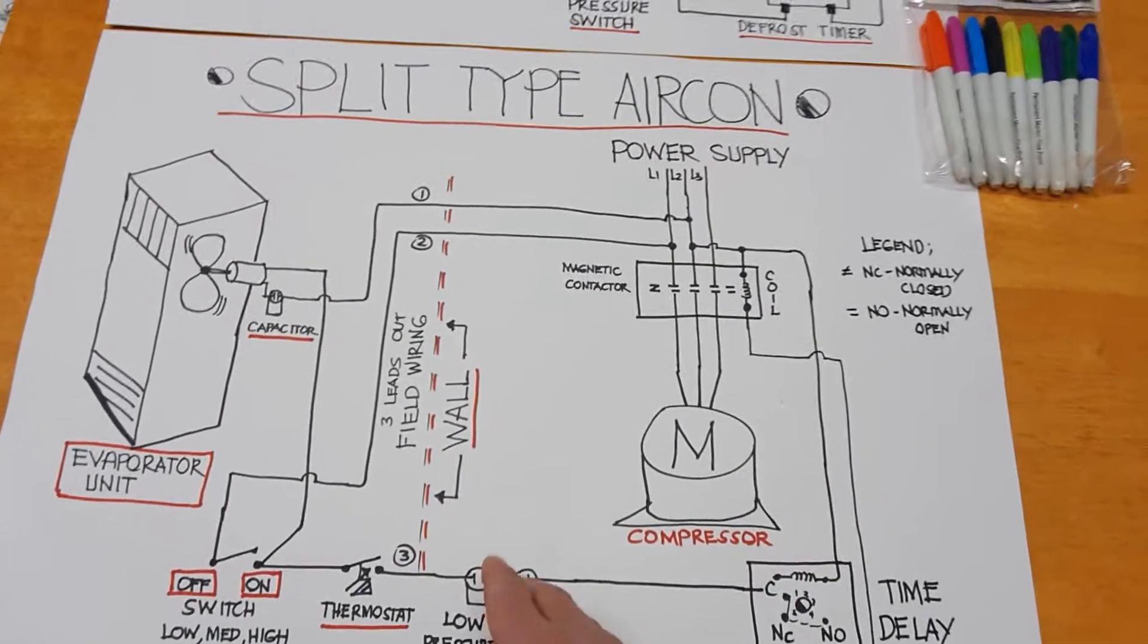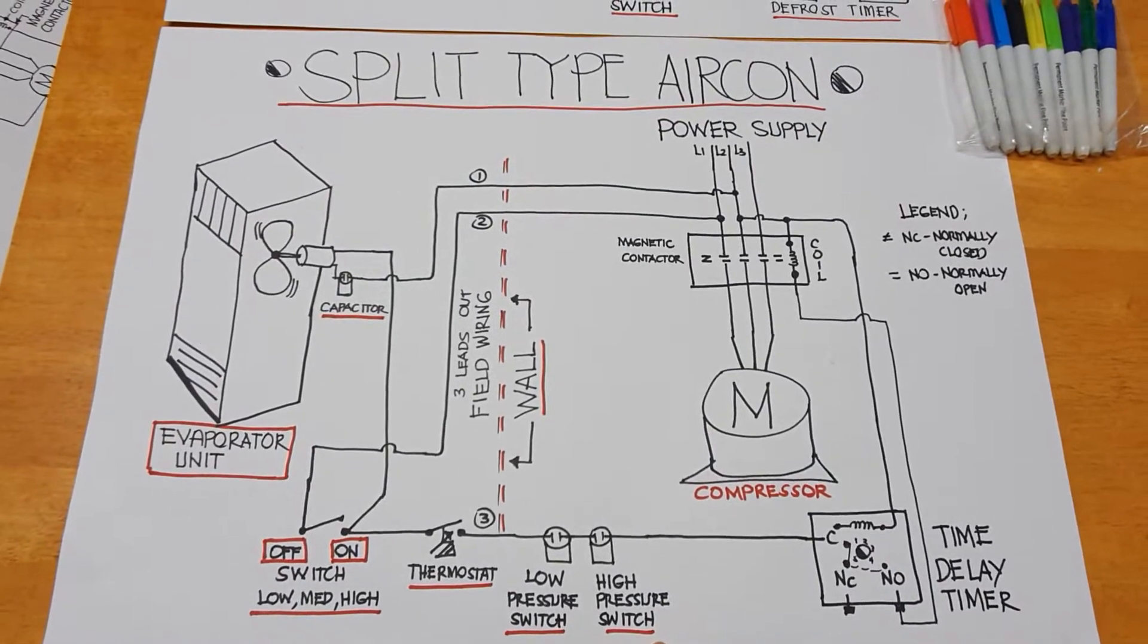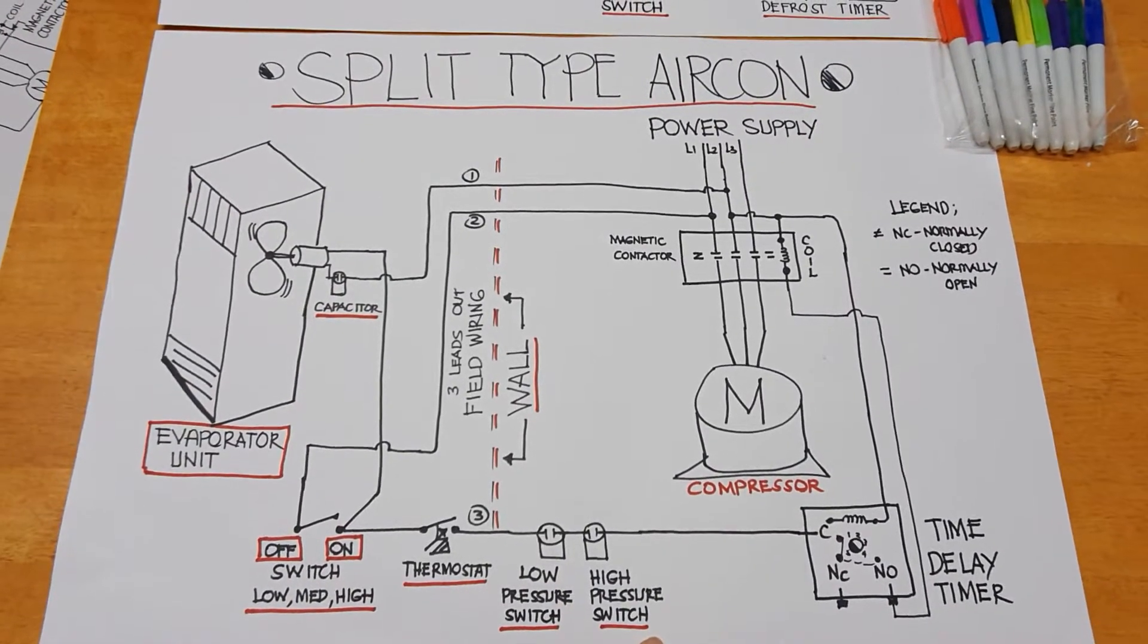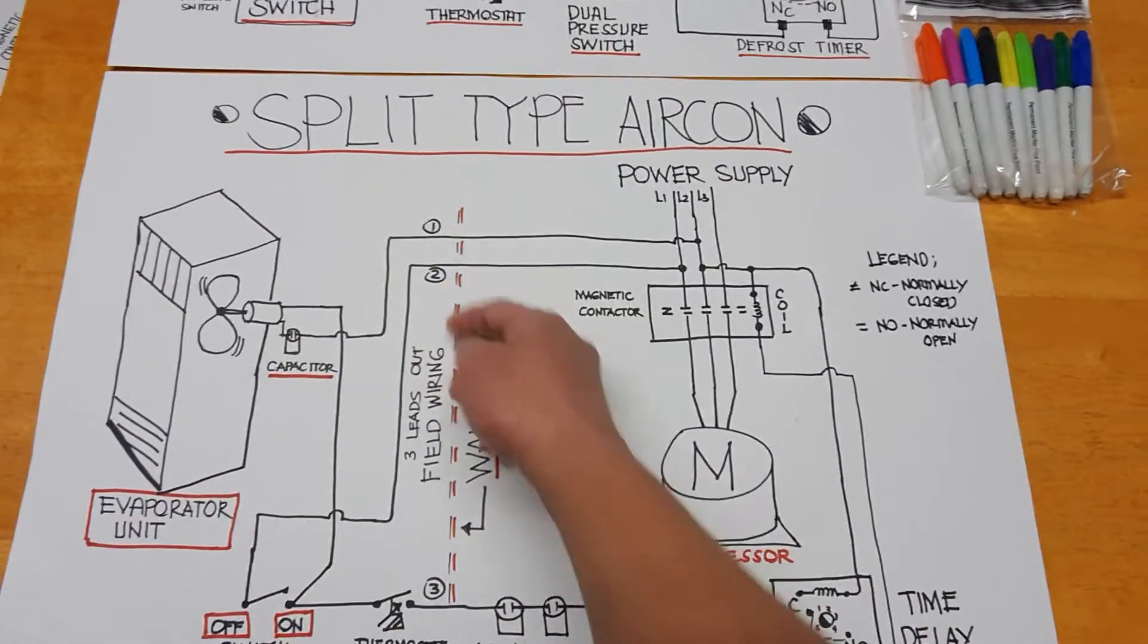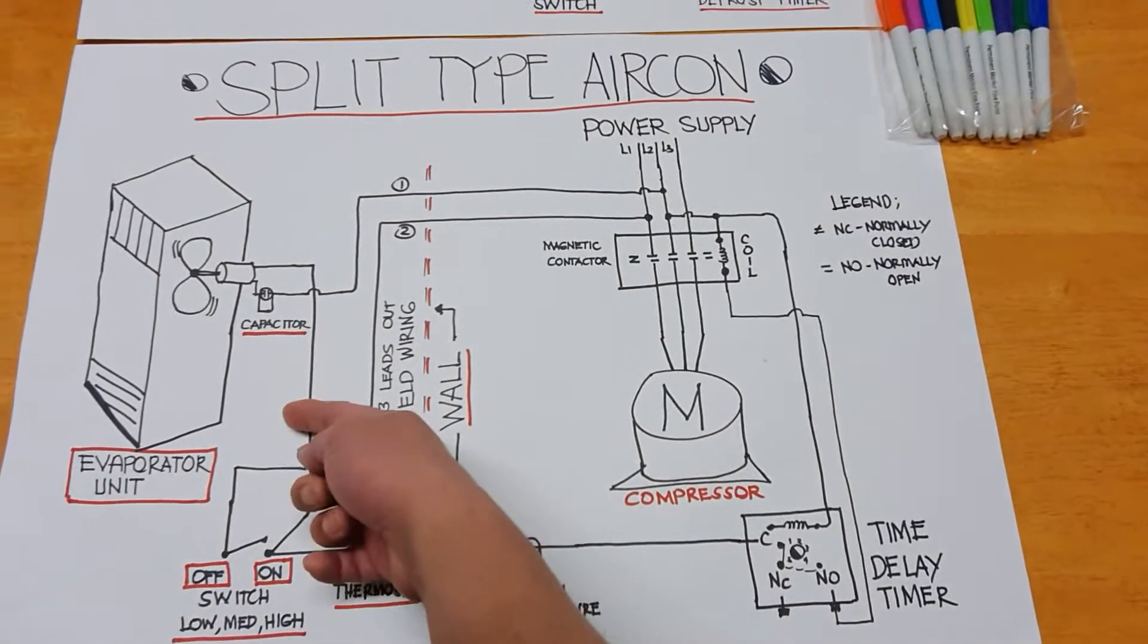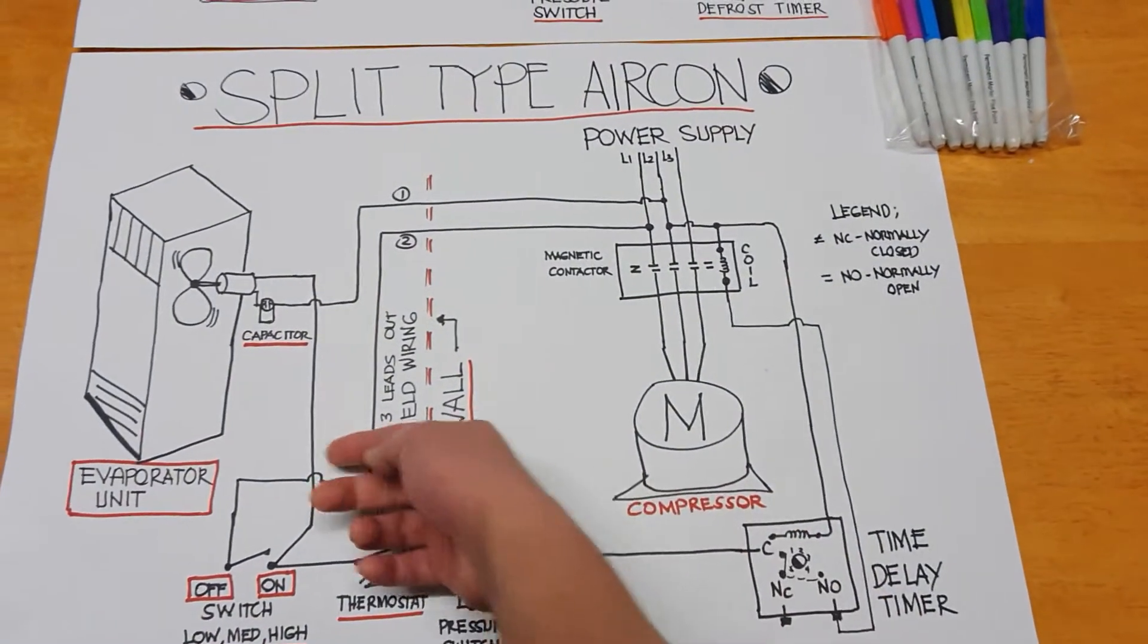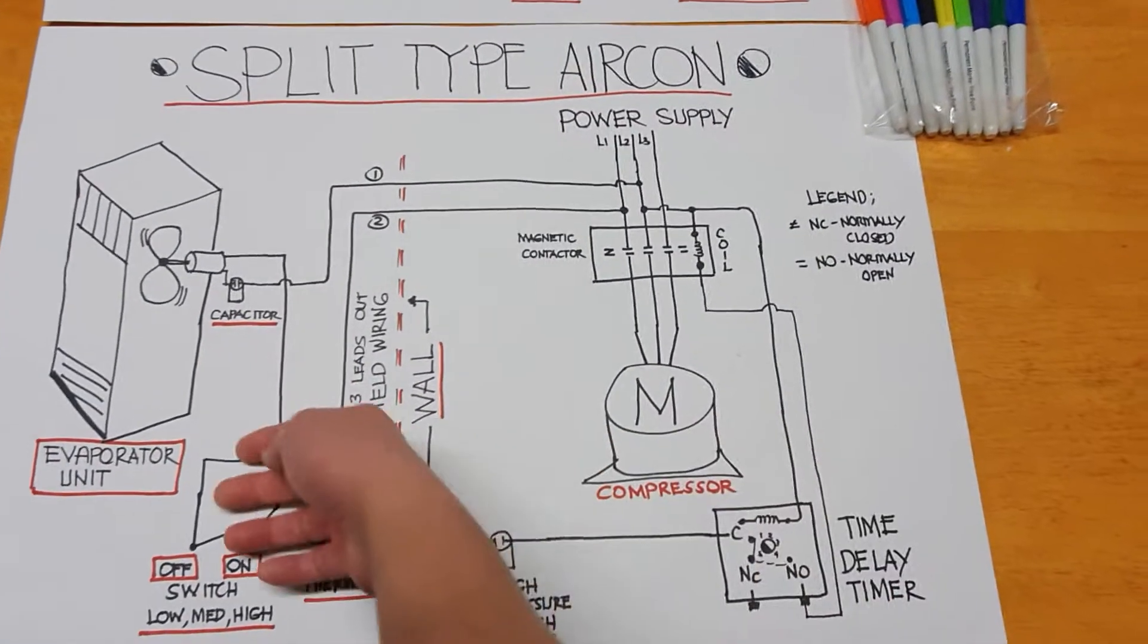Now if you do the installation in the actual installation, this is the wall. You need to make a hole here so that the pipe will go in and out here, and then the field wiring as well.